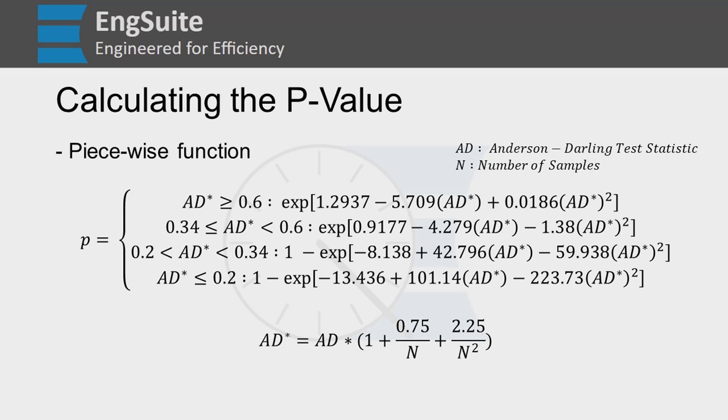So AD star is our modified Anderson-Darling test statistic. We calculate that using the equation on the bottom here, this one right down here. AD star equals the Anderson-Darling test statistic times 1 plus 0.75 over N plus 2.25 over N squared. Again, N is the number of samples.